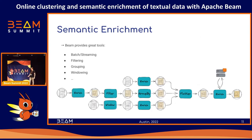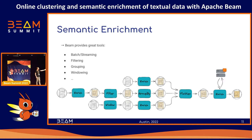So we have seen a couple of examples of what semantic enrichment means and how to do it. How does this fit into our model? The enrichment steps can be seen in our pipeline graph and they are different — some are just simple transformations, others require a call to a microservice. Apache Beam is a really nice way to integrate this into other workflows because we have all these great tools: batching pipelines, streaming pipelines, filtering, grouping, windowing — all things that make it easy to work with pipelines and integrate semantic enrichment steps.